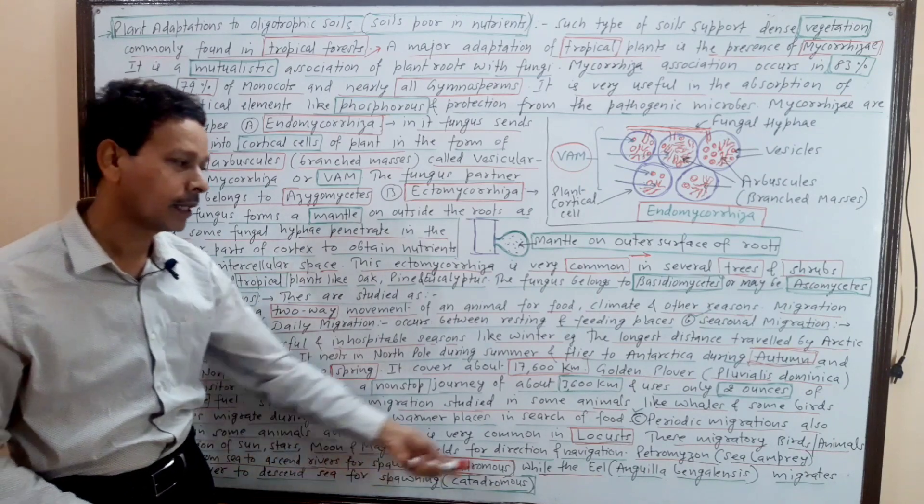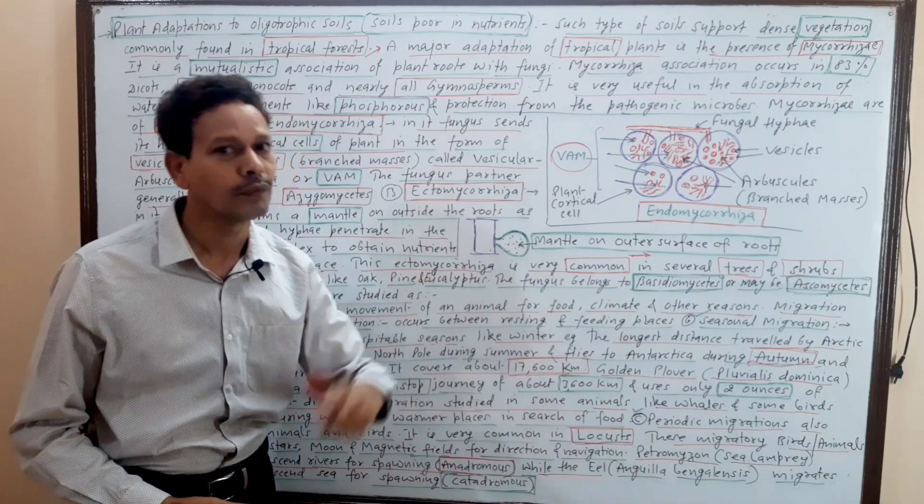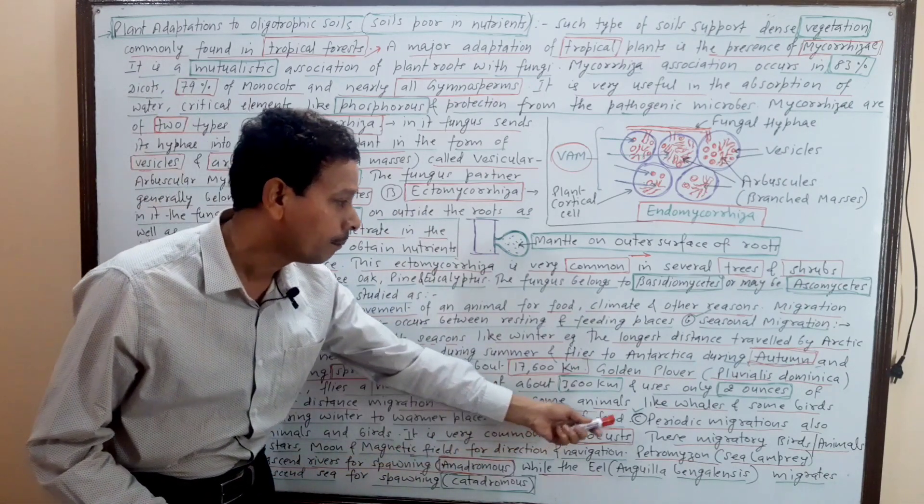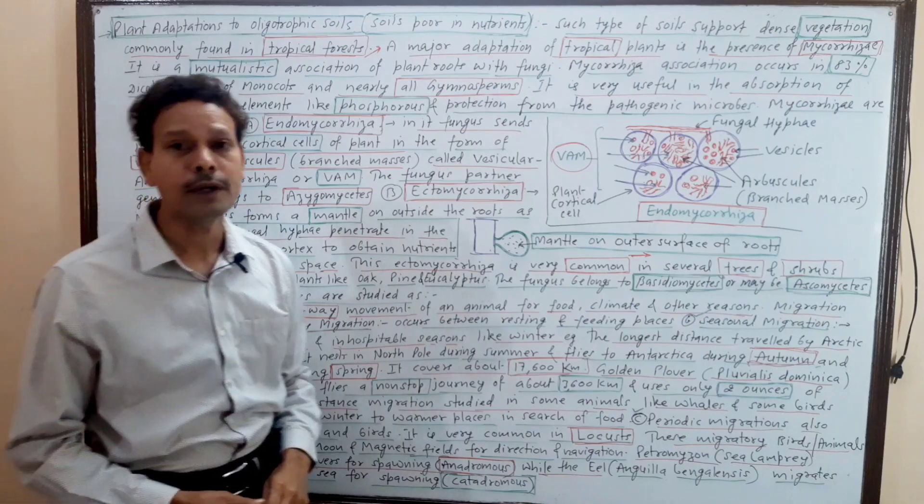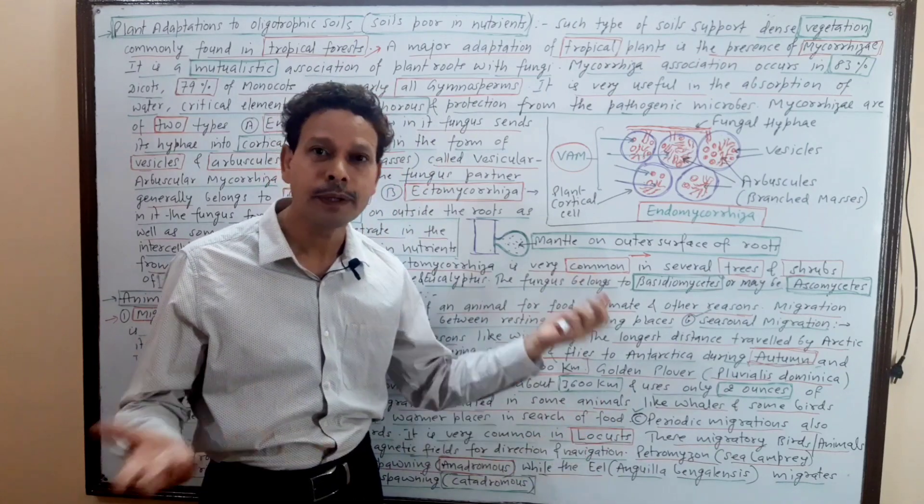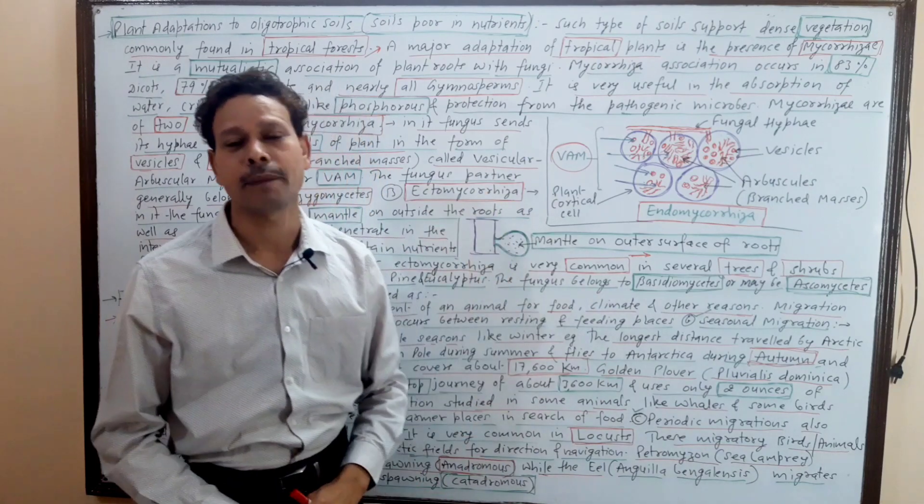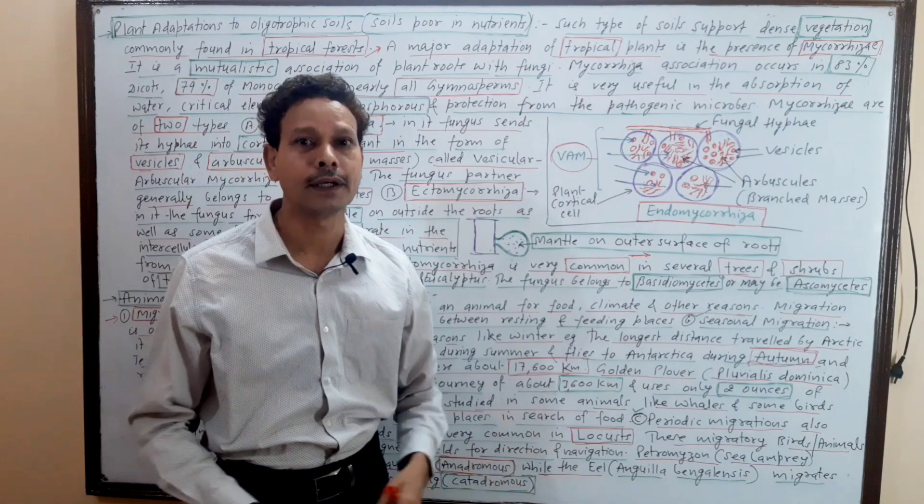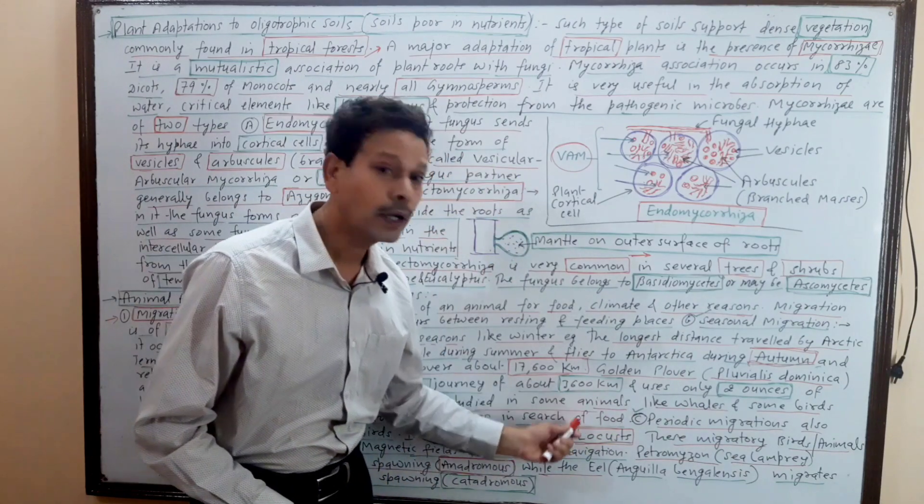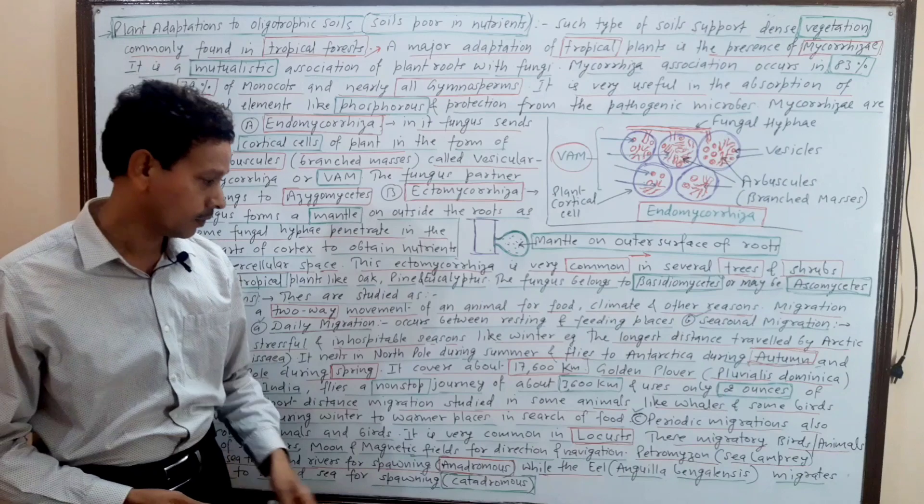Short distance migrations - some other animals and birds also migrate short distances. Periodic migrations occur particularly in case of locusts. These insects migrate from one place to another periodically, and this is very important.